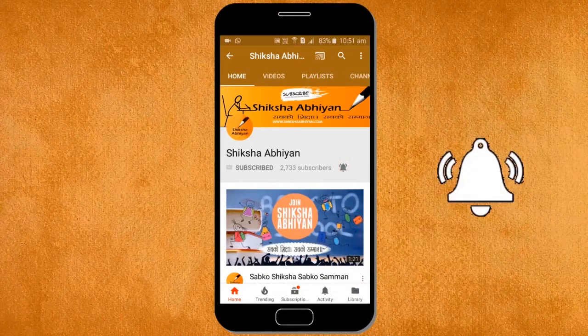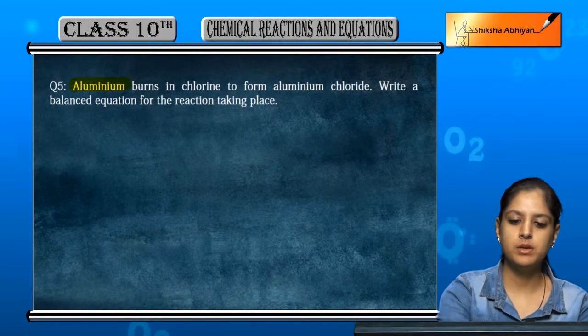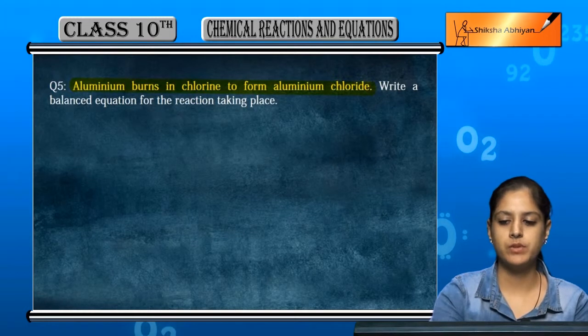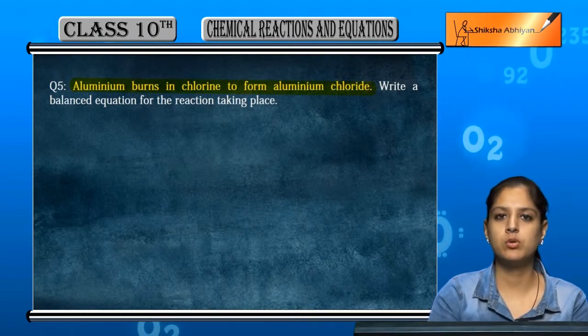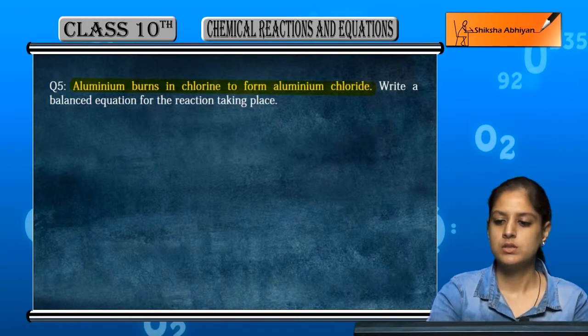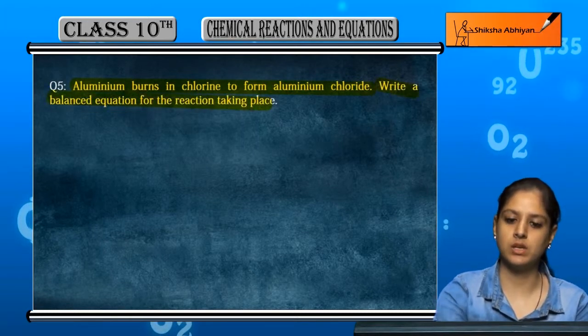Question number five: Aluminium burns in chlorine to form aluminium chloride. A reaction of aluminium and chlorine where aluminium chloride is formed. You have to write the balanced equation for this reaction.